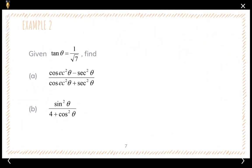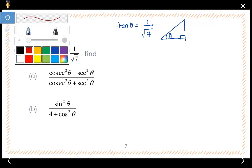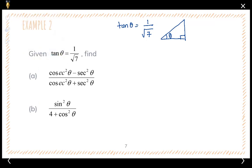Now let's look at example two. Given that tangent theta equals one over square root of seven, find (cosecant squared minus secant squared) divided by (cosecant squared plus secant squared). We start by transferring tangent theta equals one over root seven into a right angle triangle. Since tangent is opposite over adjacent, the opposite is one and the adjacent is square root of seven. Using Pythagoras' theorem, the hypotenuse is two square root of two.